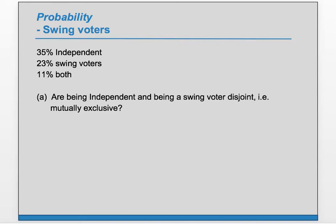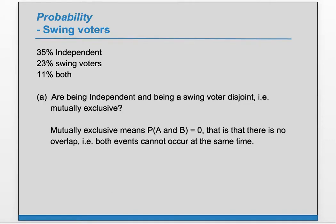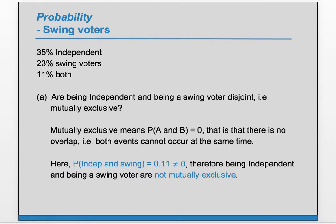Part A: are being independent and being a swing voter disjoint, i.e. mutually exclusive? Mutually exclusive means one excludes the possibility of the other. Since 11% are both, they can both happen at the same time, so they are not mutually exclusive. More formally, mutually exclusive means P(A and B) equals zero — there is no overlap. In this case, P(independent and swing) equals 0.11, which does not equal zero. Therefore, we have proven mathematically that being independent and being a swing voter are not mutually exclusive.